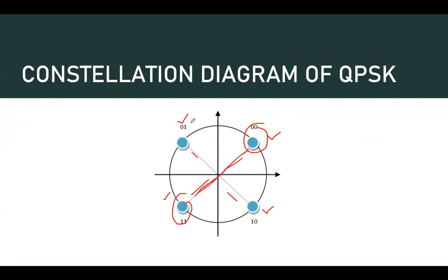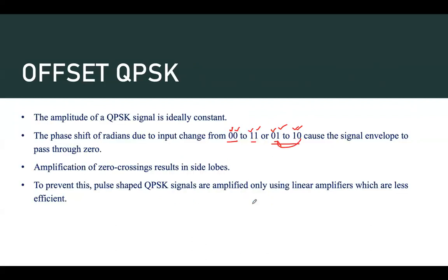Whenever there is a change from 01 to 10, the signal also passes through zero. If the signal passes through zero, we get side lobes. In order to avoid side lobes, we need to avoid the zero crossing, so we go for something called offset QPSK.